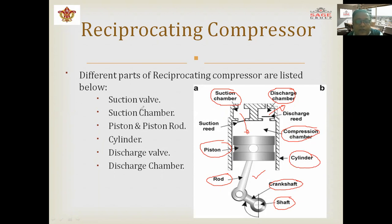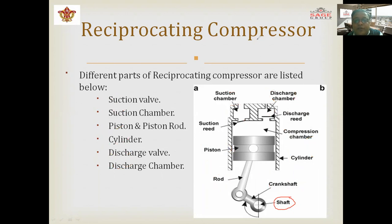In total, there are seven parts described: suction valve, suction chamber, piston, piston rod, cylinder, discharge valve, and discharge chamber. These are the basic functioning parts of the operating compressor.